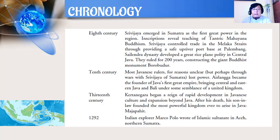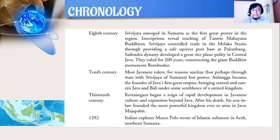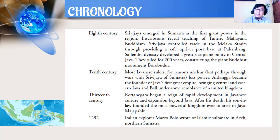13th century: Kertanegara began a reign of rapid development in Javanese culture and expansion beyond Java. After his death, his son-in-law founded the most powerful kingdom ever to rise in Java — Majapahit. Jadi abad ke-13, Kertanegara mengembangkan wilayahnya di budaya Jawa sampai di luar Jawa, dan setelah kematiannya anaknya — menantunya — mendirikan kerajaan luar biasa di Jawa yaitu kerajaan Majapahit.